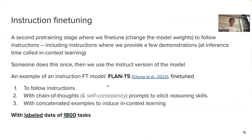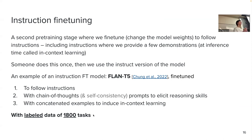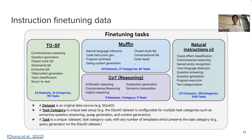Some of these examples include chain of thought. There is also something called self-consistency that I'll skip. They also sometimes produce in-context learning-like examples to induce in-context learning abilities of the model later on. They used 1800 tasks, which is kind of mind-blowing. The NLP community had produced 1800 task datasets — that's a lot, and they are quite varied, spanning all sorts of abilities.